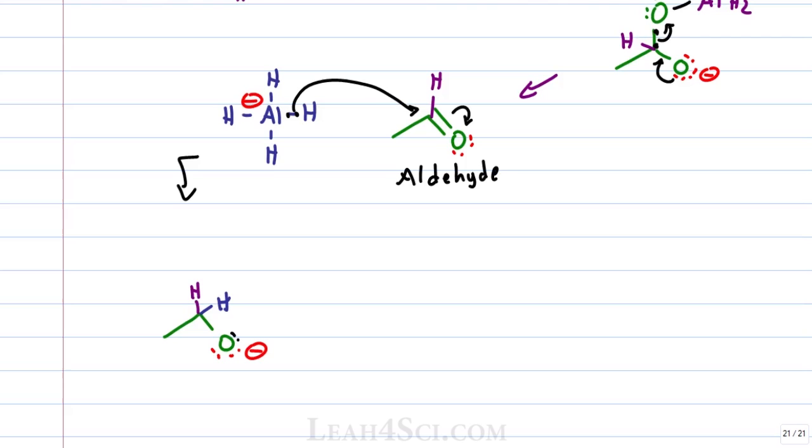Oxygen can't collapse back down because there's nothing to kick out, so it'll wait patiently in solution while we slowly pour in some acid. The O minus will reach for that partially positive hydrogen atom, collapsing the electrons back onto oxygen to form water, giving us a final product, as expected, a primary alcohol.